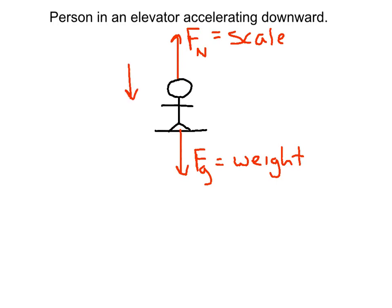Now our acceleration is down. So our net force equation in the y direction, we're going to say down is positive and up is negative because of the direction of acceleration. So we would say Fg minus Fn equals Ma. And then we go from there.